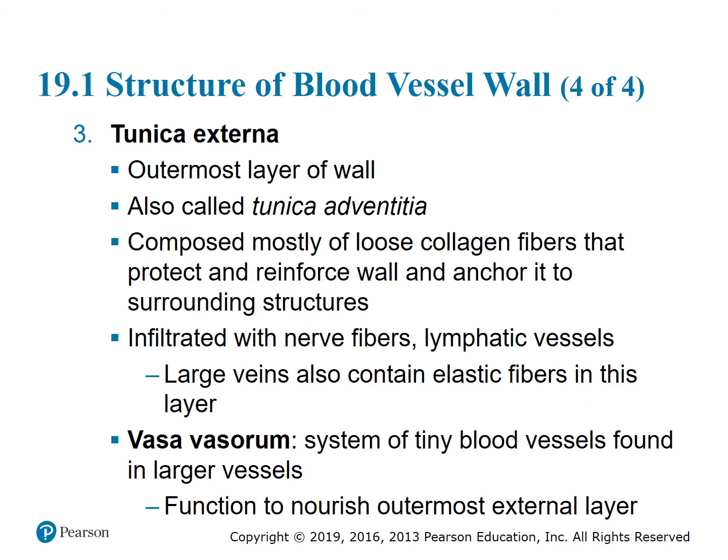The tunica externa is the outermost layer, also called the tunica adventitia. It's composed mostly of loose collagen fibers that protect and reinforce the wall and anchor it to surrounding structures. It's infiltrated with nerve fibers and lymphatic vessels. Large veins also contain elastic fibers in this layer. The vasa vasorum is a system of tiny blood vessels in larger vessels that nourish the outermost external layer.